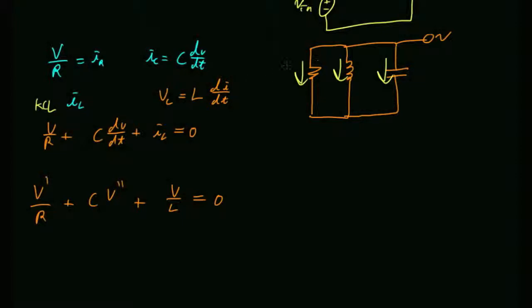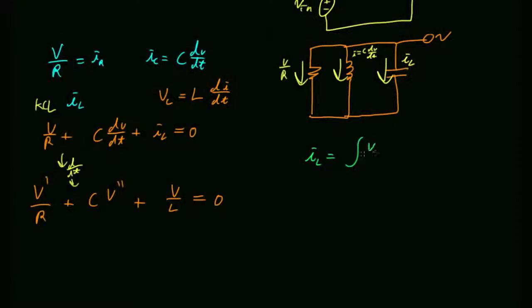This one was easy: v/R. The capacitor current is i = C·dv/dt. The inductor current was just called i_L. Adding them and setting equal to zero, then taking the derivative of the whole equation allows substituting i'_L = v/L. The trick for the inductor is to differentiate rather than write it as an integral of v/L dt, which is messy. That substitution leads to the final form.